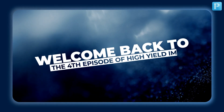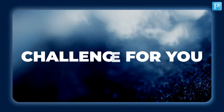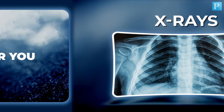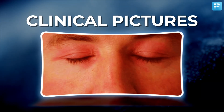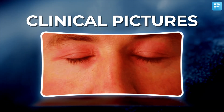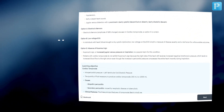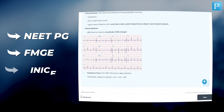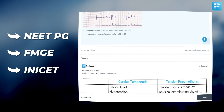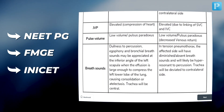Welcome back to the 4th episode of High Yield Images. To add a twist to this video, we have a challenge for you. We will reveal the images and the names of the associated disease, and you need to decode the key findings from the image. All of these topics have been repeated multiple times in the past NEET-PG, FMG, and INICT, so do not underestimate how important this can be.